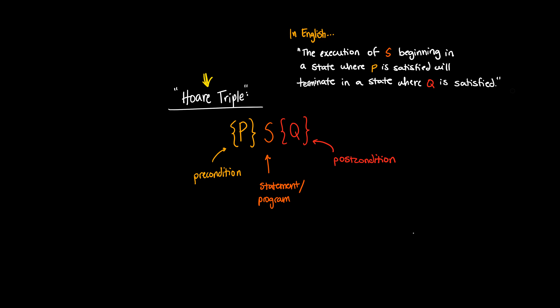The statement or program usually manifests as some kind of assignment statement. For example, you might have P, and then you might have X mapped to E, and then Q.